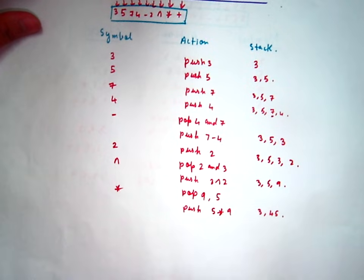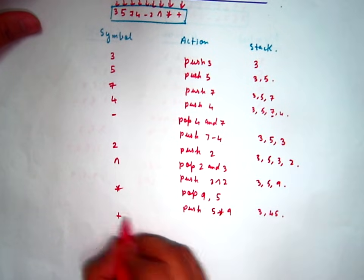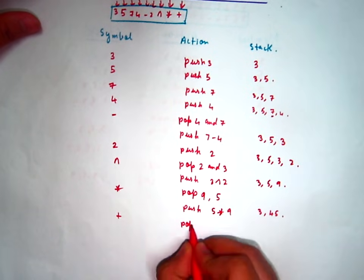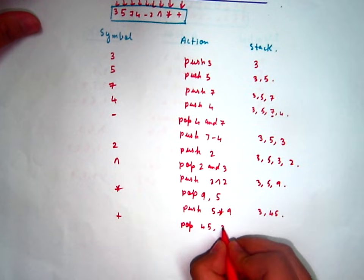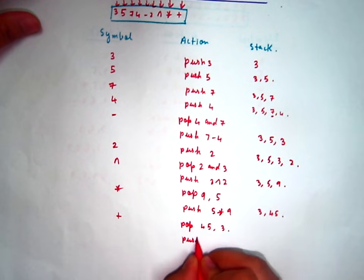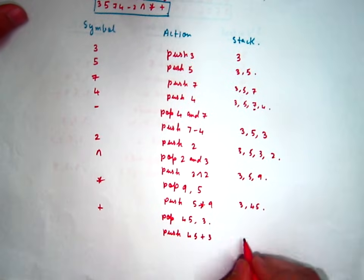Then comes the plus operator. Pop out the elements, pop out 45, 3, and push 45 plus 3. That is 48.